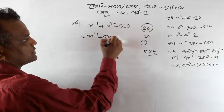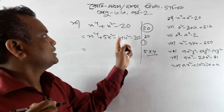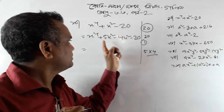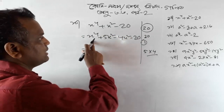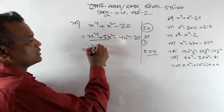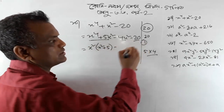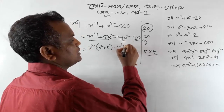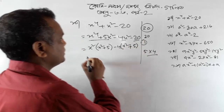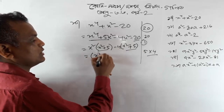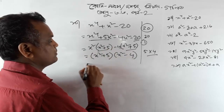x equals x to the power 4 plus 5x squared minus 4x squared minus 20. So x squared is equal to x squared minus 4, those 5 factors 4 equal to x squared, x squared minus 4.